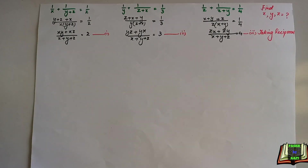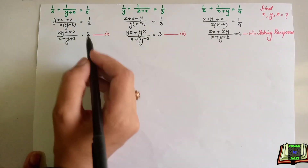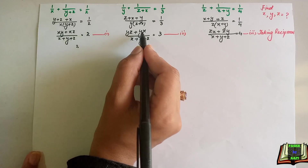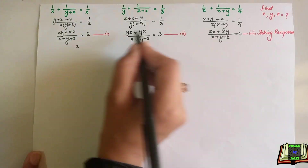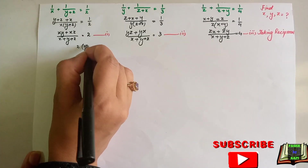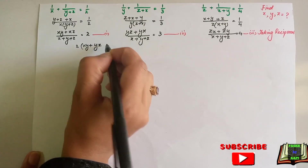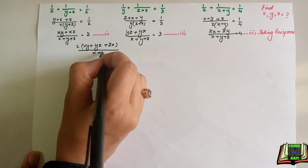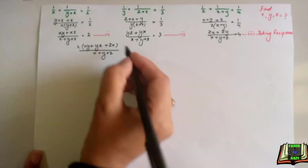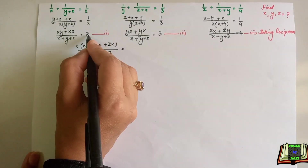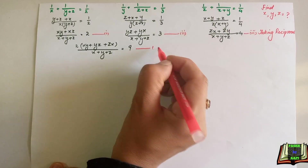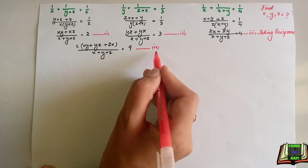In the next step we are going to add equation 1, equation 2, and equation 3. Since xy, yz, and zx each appear twice, we take 2 as common and get: 2(xy+yz+zx) divided by (x+y+z) equals 2+3+4, which is 9. Let's name this equation 4.